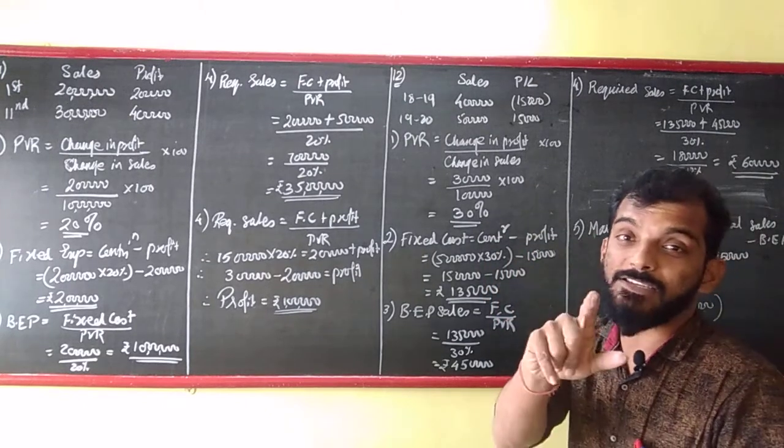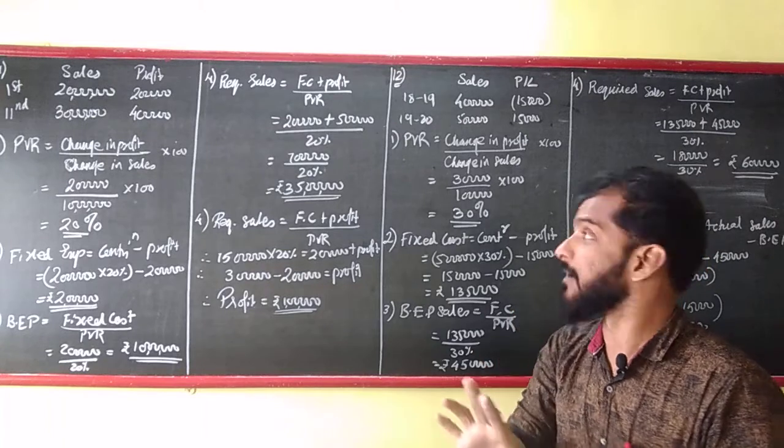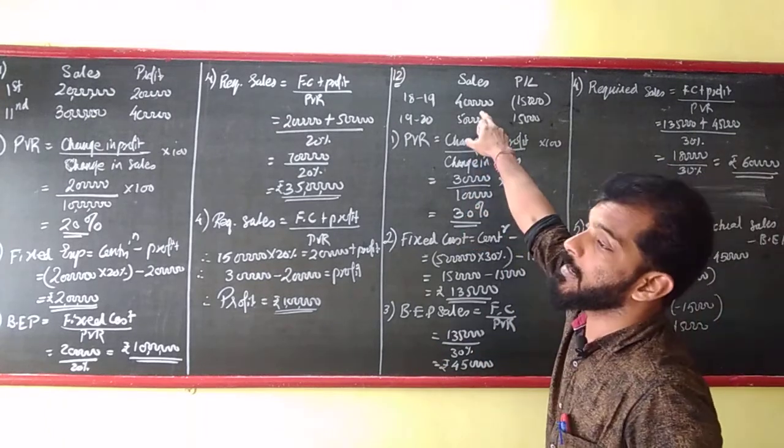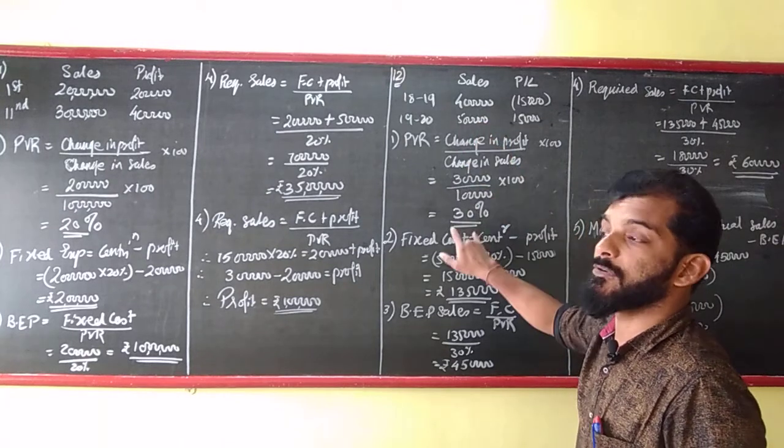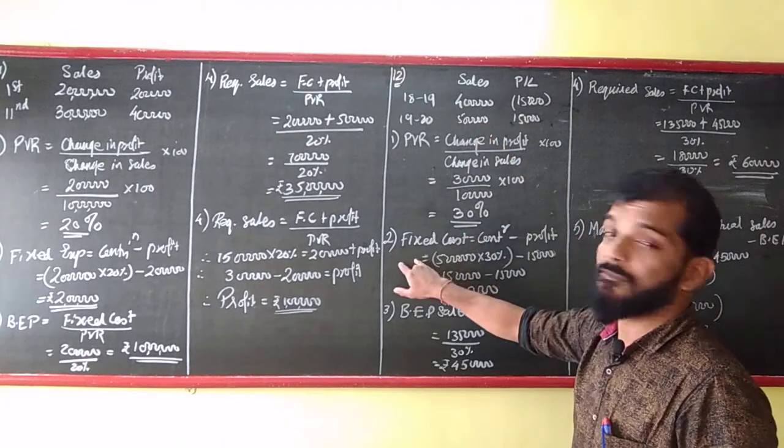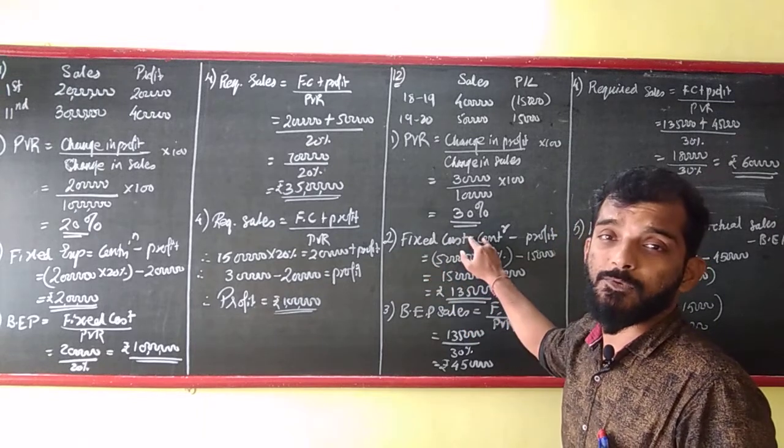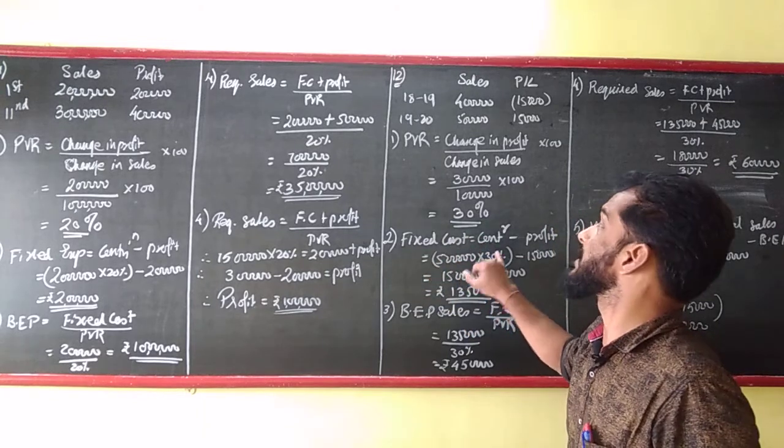It is 30,000. So 30 upon change in sales 1 lakh, 30,000 upon 1 lakh into 100, that is equal to 30%. Then I am having fixed costs. Fixed costs is contribution minus profit. Contribution is sales into PVR.